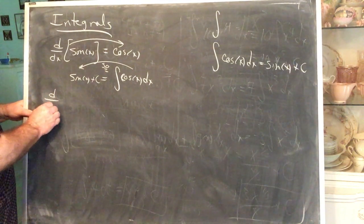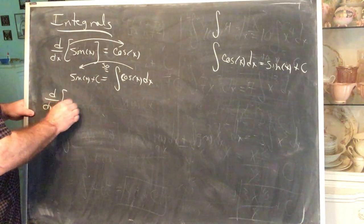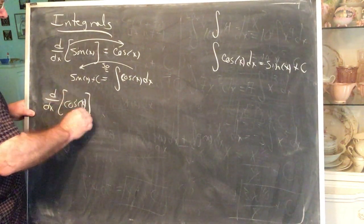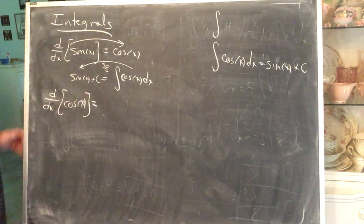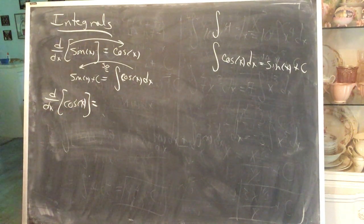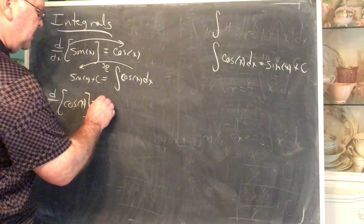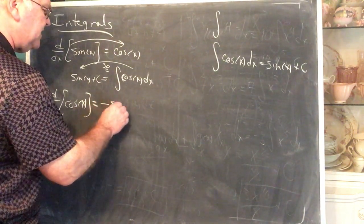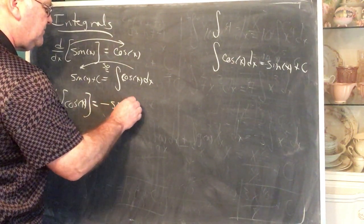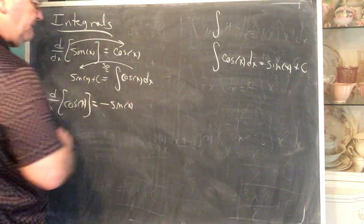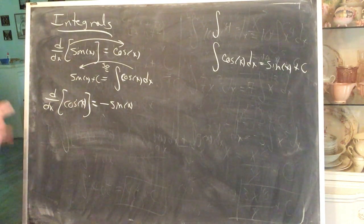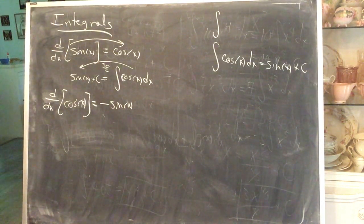What's the derivative of cosine? The derivative of cosine is not sine — the derivative of cosine is negative sine.